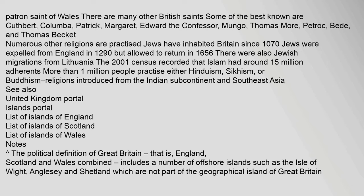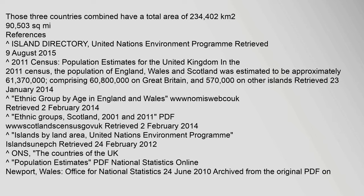See also: List of Islands of England, List of Islands of Scotland, List of Islands of Wales. The political definition of Great Britain — that is, England, Scotland and Wales combined — includes a number of offshore islands such as the Isle of Wight, Anglesey and Shetland, which are not part of the geographical island of Great Britain. Those three countries combined have a total area of 234,402 square kilometres.